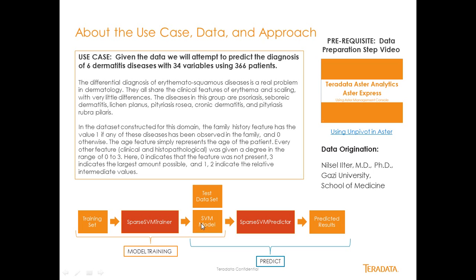We'll take that training set and we'll push that into sparse SVM trainer. Out will come a model. We'll use that model along with a test data set of unknown skin allergies with the 34 variables as well. And we'll push that into a sparse SVM predictor and out will come the predicted results. I do recommend when you do this, you take a look at the unpivot in Aster video that's already been previously recorded.